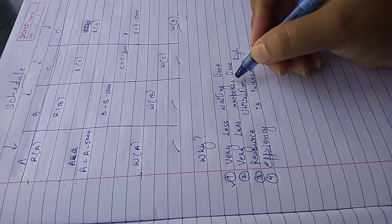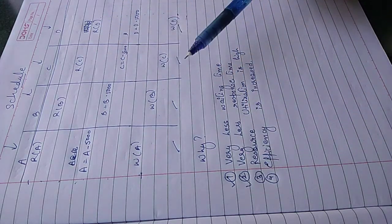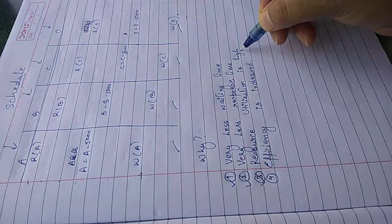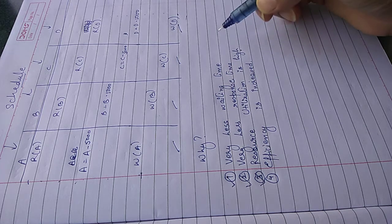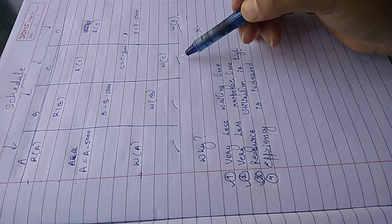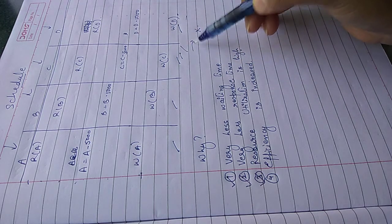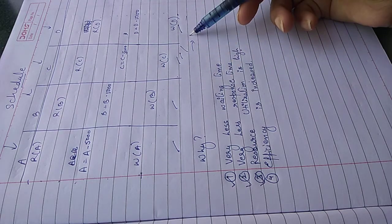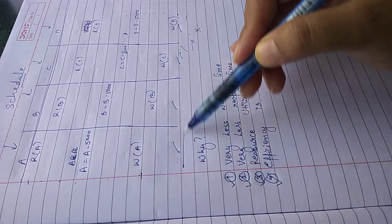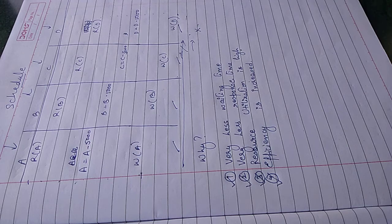Then resource utilization is high. Resource utilization is high means there is not a single second where DBMS is sitting idle. Wherever, whenever there is time, it will execute some process. And then efficiency is increased. Of course, when it is working something all the time, efficiency increases. All right, this is it.